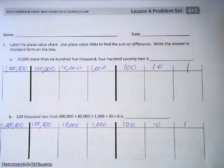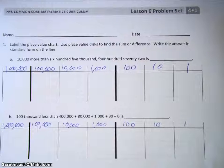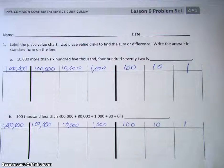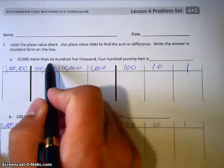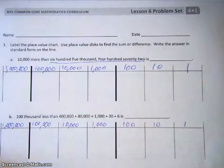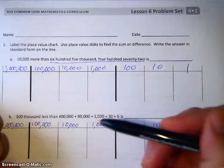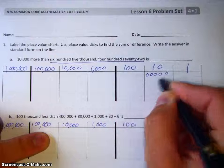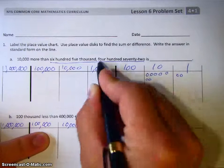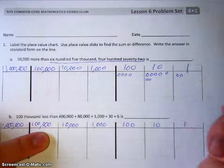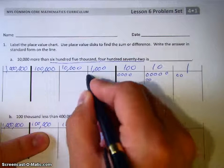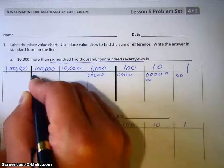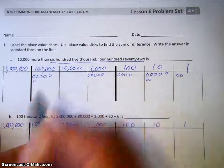For number 1, we're going to label the place value chart — as you can see I've already done. We're going to use place value to find the sum or difference, and write the answers in standard form. So for example, we have 10,000 more than 605,472. We put those numbers in: 2 ones, 7 tens, 4 hundreds, 5 thousands, 600,000. So it looks like that.